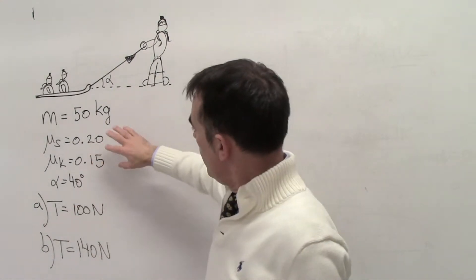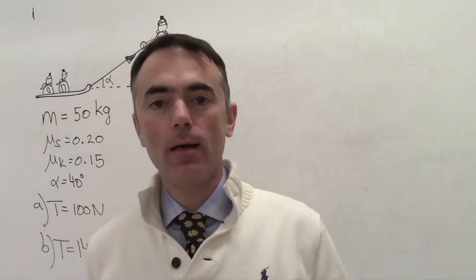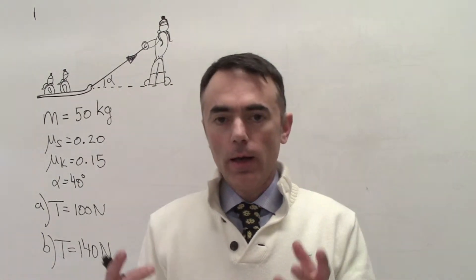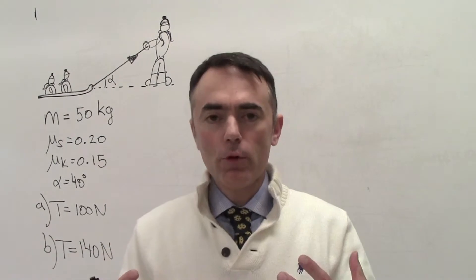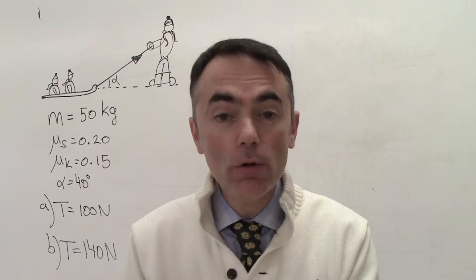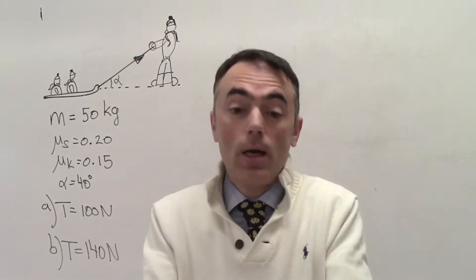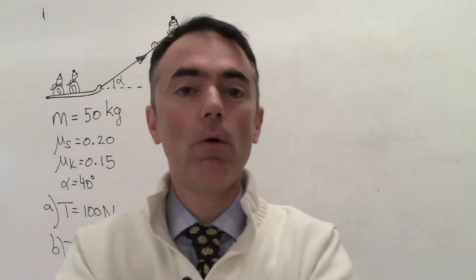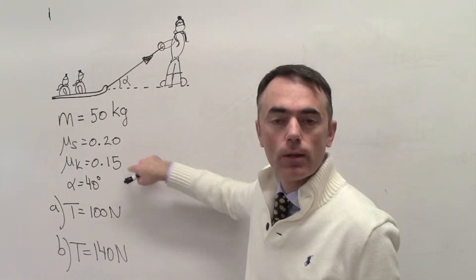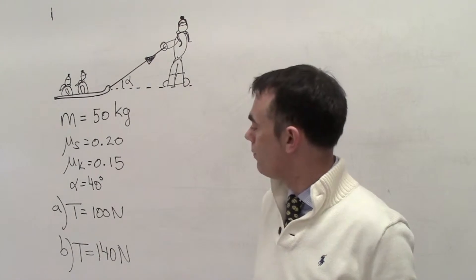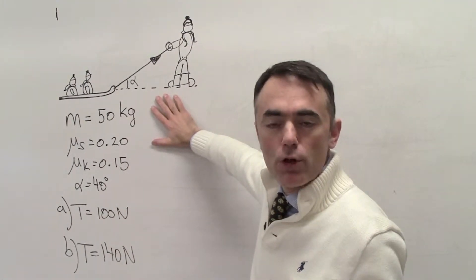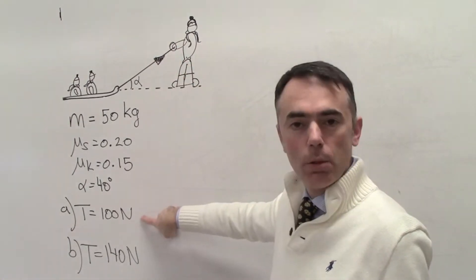The static friction coefficient is always larger than the kinetic, because from experience you know it's always harder to start an object moving when you have friction than to keep it moving once it's already in motion. That's why the static friction coefficient is always larger than the kinetic friction coefficient.